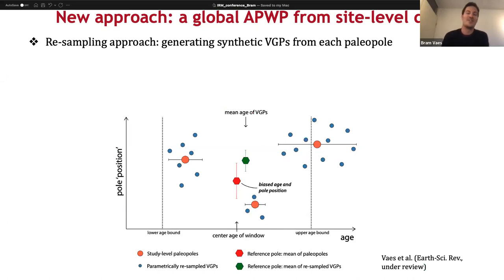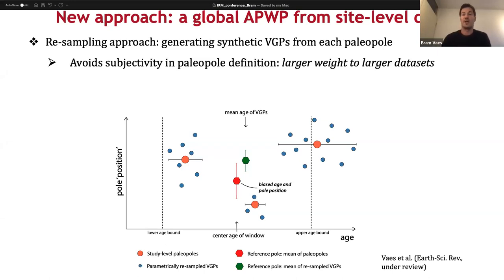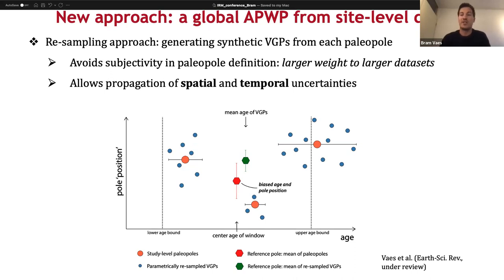The problem is that it would take ages to collect all the site-level paleomagnetic data, and especially for older studies this is often not even possible. So what we tried instead is a resampling approach whereby we generated synthetic VGPs — synthetic site-level data from each paleomagnetic pole — using the published statistical parameters of each pole, thereby avoiding subjectivity in the definition of a paleomagnetic pole. This procedure gives larger weight to larger datasets automatically, because we create a larger number of VGPs — the same number as was originally used to calculate that study's mean pole. This also allows easier propagation of spatial and temporal uncertainties, as you can see here in this figure. For more details, I refer you to the preprint that is already online of the paper we submitted to Earth Science Reviews.